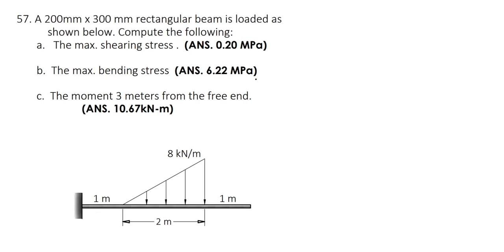To solve this problem, the maximum shearing stress and bending stress for a cantilever beam tend to occur at the support, which is this fixed end here. It has a support reaction going vertical and a moment reaction. Let's call this Vmax for the shear and Mmax for the moment.